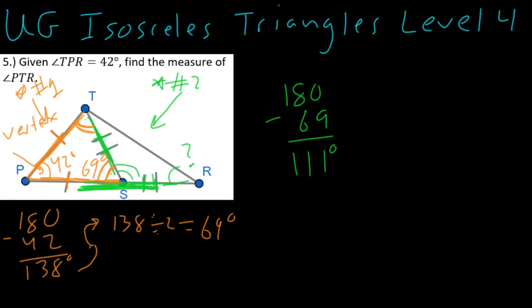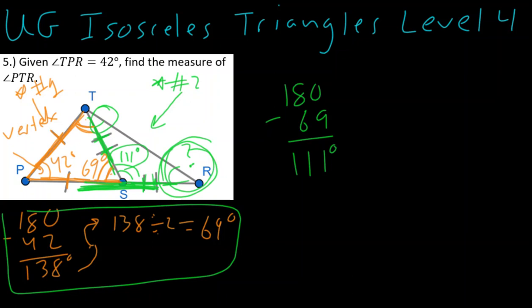Okay. So now that I know that this is 111 degrees, all I have to do is now find this missing angle. And what we do is we simply repeat the process here. We say, okay, I know that these two base angles right here plus this vertex angle, they all add up to 180.